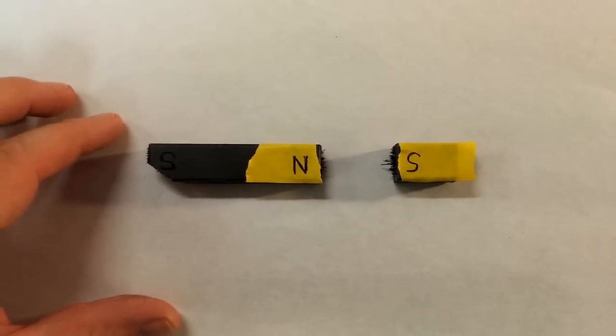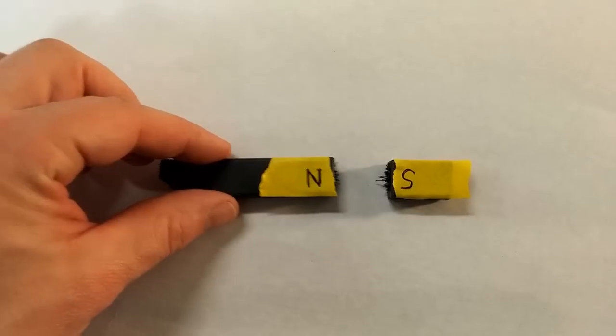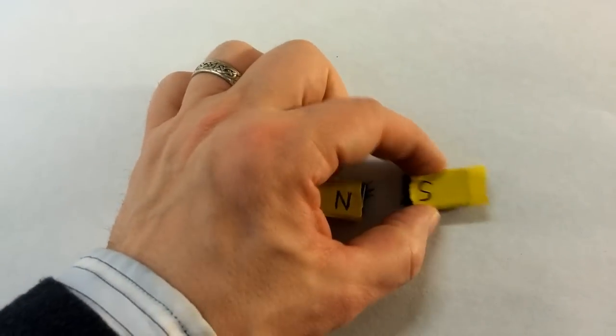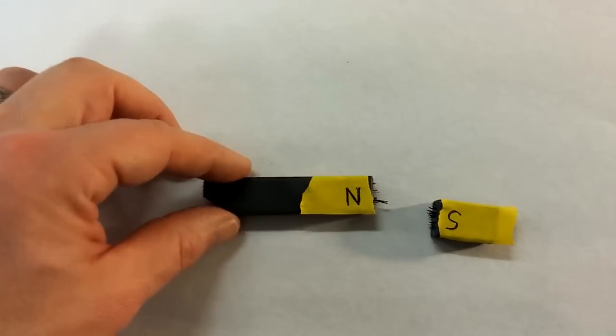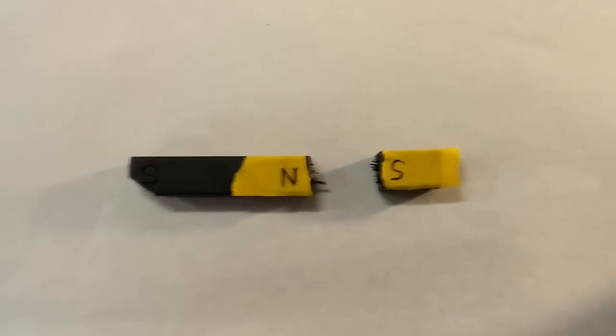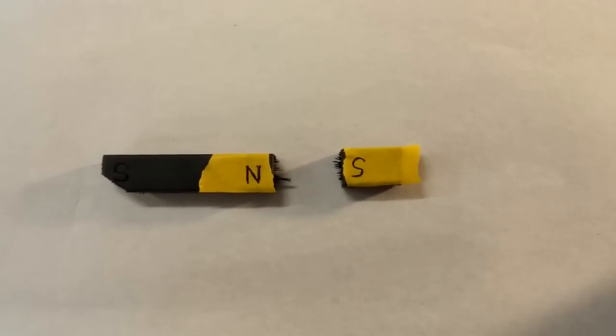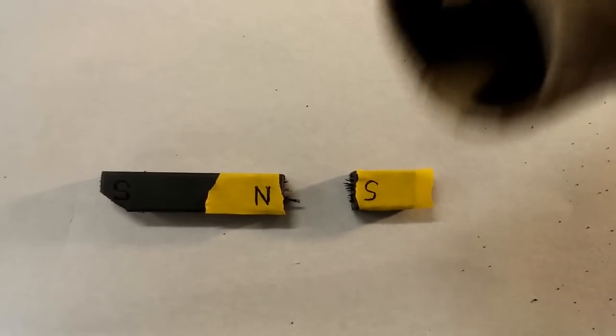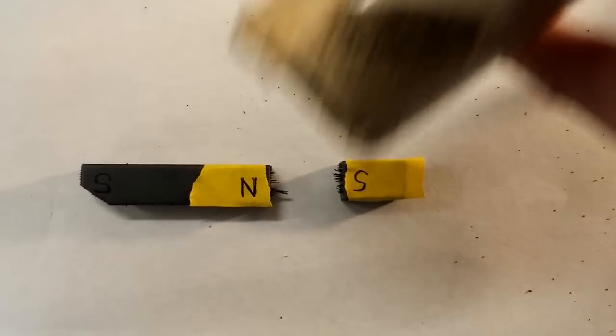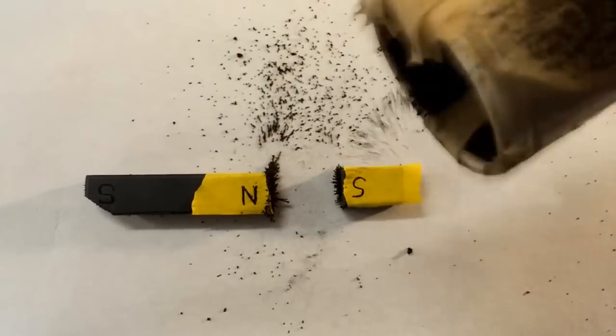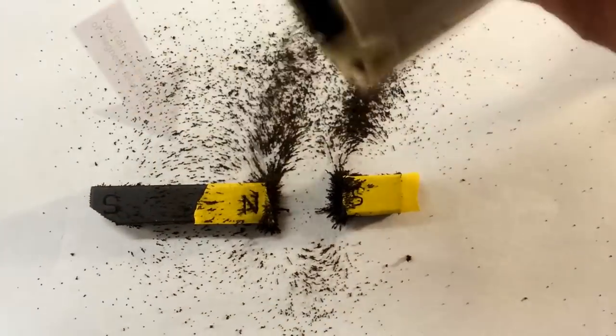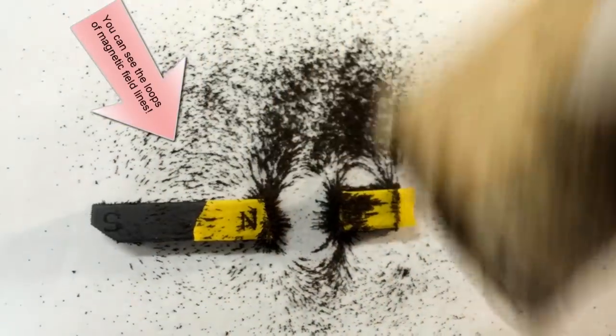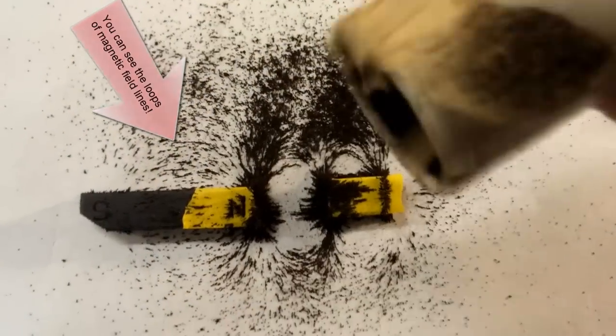These are the ends of two bar magnets. Right now they're going to attract. Let's see what the magnetic field lines look like around two bar magnets that are attracting. I want to sprinkle some iron filings around it and see if we can see the magnetic field lines. There we go. You can see them.